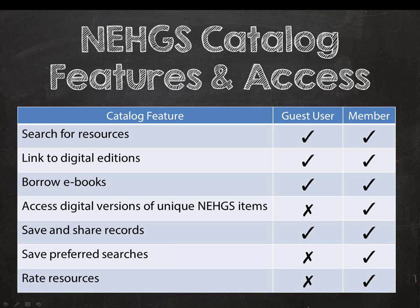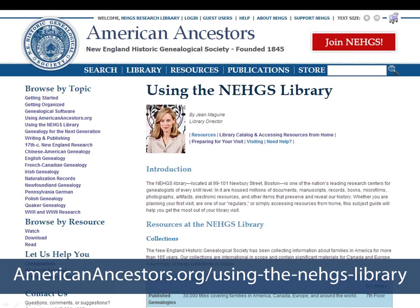This brings us to the end of our presentation. To review: Emily showed a variety of search methods; we showed links to freely available e-books and digital items for member use; and we looked at features to save and share records, create preferred searches, and rate records. For more information about the NEHGS Library visit the Using the NEHGS Library page on AmericanAncestors.org, or email library@NEHGS.org. Thanks for listening — now we'll answer your questions.